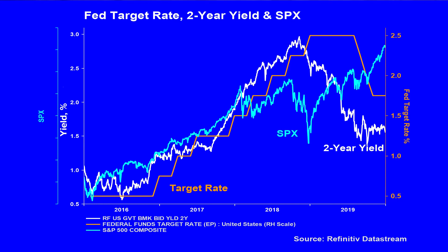The final hike by the Fed, however, was one hike too many, and this led to a 20% collapse in the S&P at the end of 2018.